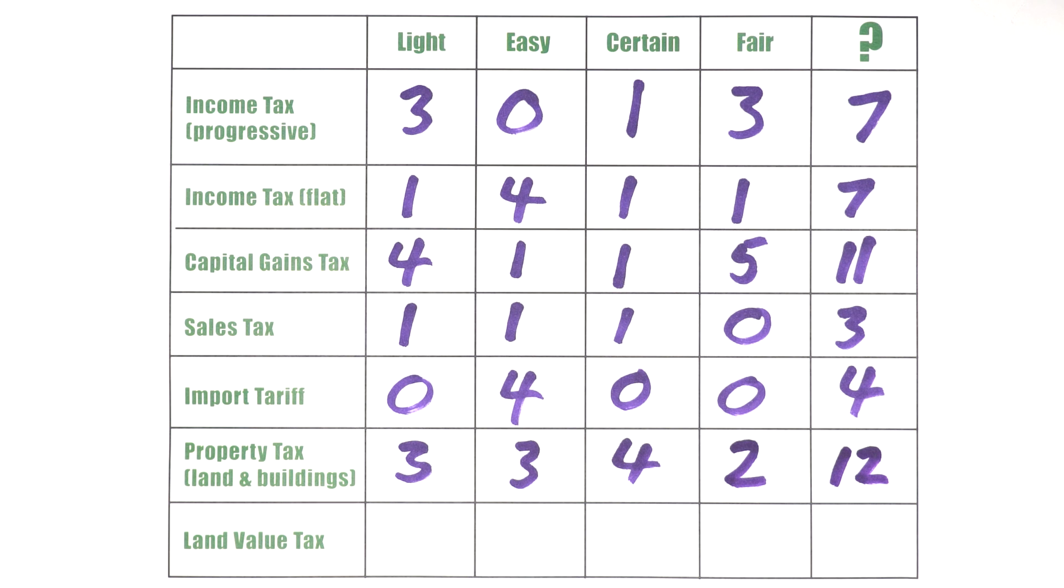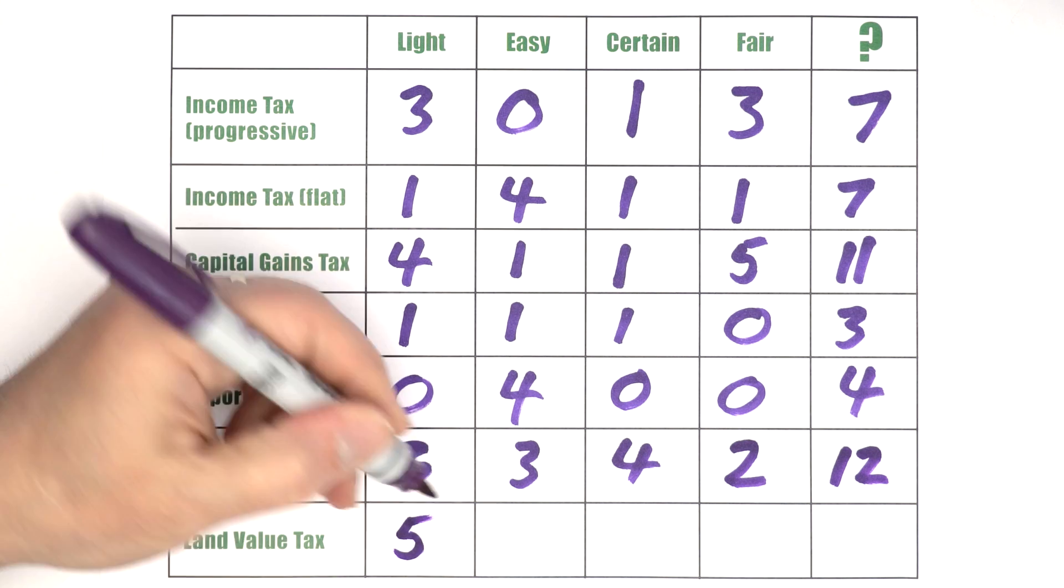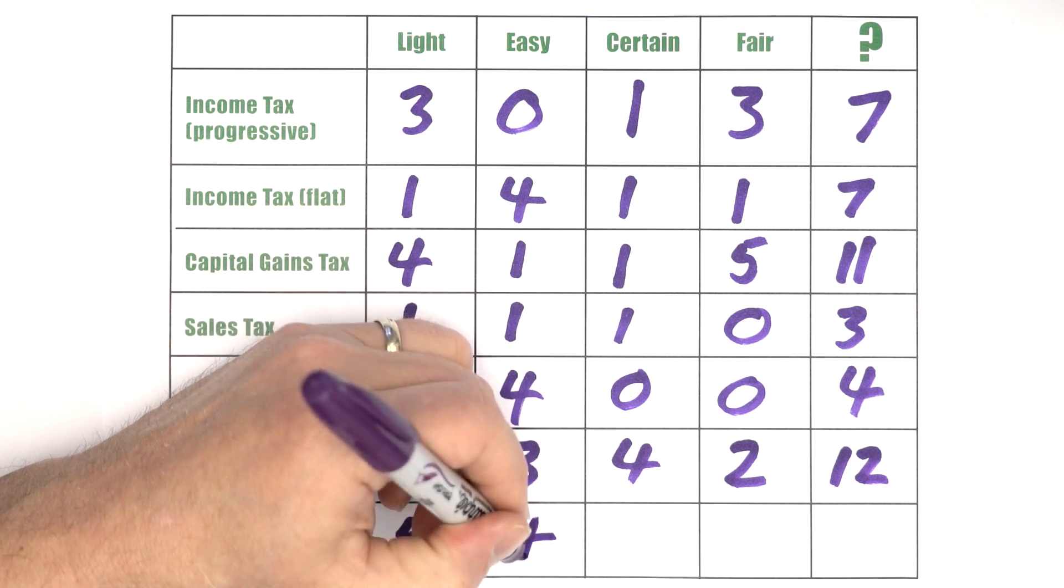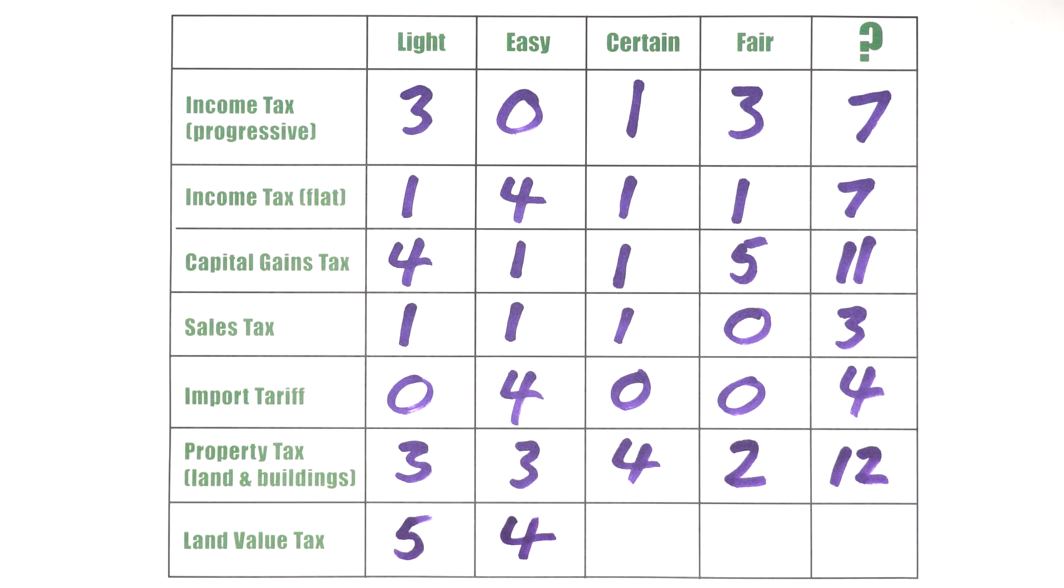Now, how about a land value tax? I think you know where we're going with this. Is it light on production? Absolutely light on production because land is not produced. The value of land is completely a surplus that no one produces. Is it easy and cheap to collect? Well, it is because land is very easy to assess. Much easier to assess than land and buildings together. And land value assessments are public information. I'm only going to knock off one point there because the transition to a land value tax system might entail some adjustment and some investment. But it's pretty easy and cheap to collect.